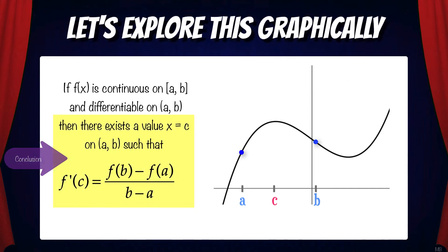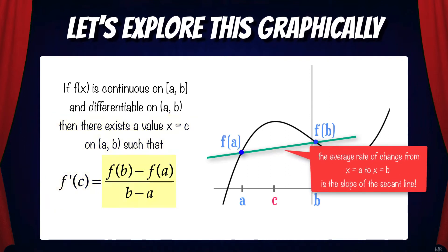The conclusion of the mean value theorem states that there exists a value x equals c within the open interval a,b such that f prime of c equals f(b) minus f(a) over b minus a. That expression is just the average rate of change of the function from x equals a to x equals b — in other words, it's the slope of the secant line.